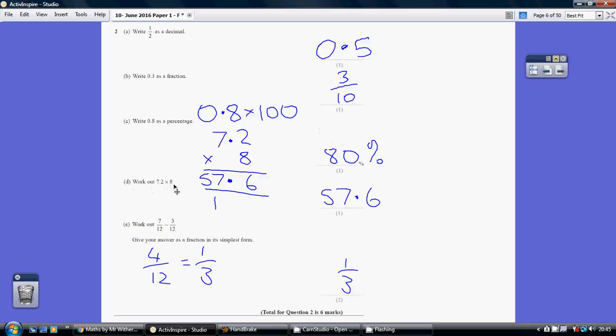Work out 7.2 times 8. I think when it's as simple as this, rather than resort to the grid method, just write the two digits above the single digit like this, and then think about it. 8 times 2 is 16, so that's 6 carry the 1. 7 times 8 is 56, so 57.